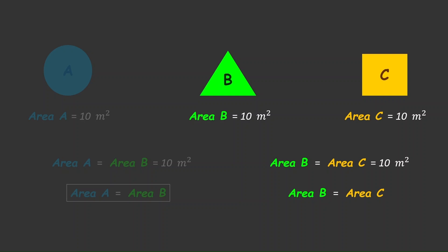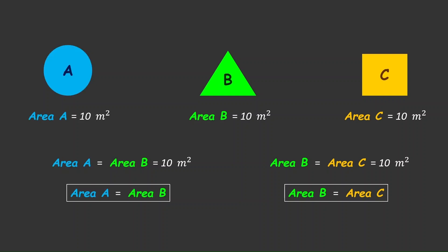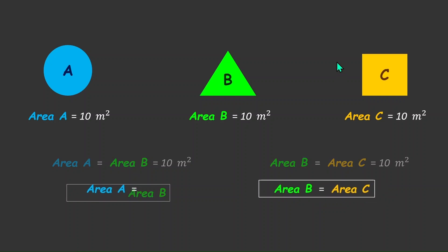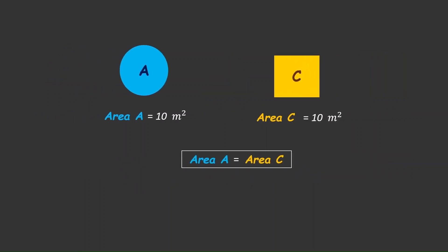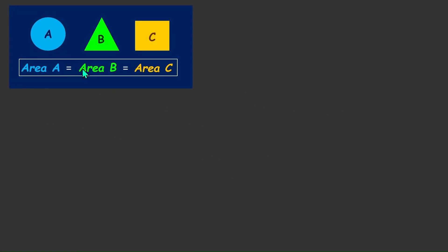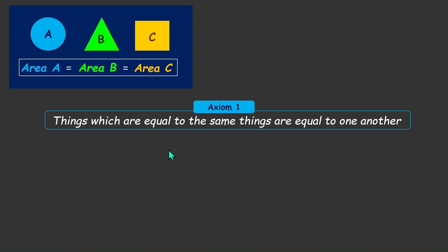Now let's look at both facts together. We have area A equal to area B, and from the second example, area B is equal to area C. Taking all of them together, we get area A equals area B equals area C. If we ignore the triangle B, we can clearly see that area A is equal to area C. This gives the idea for the first axiom, which says that things which are equal to the same thing are equal to one another.